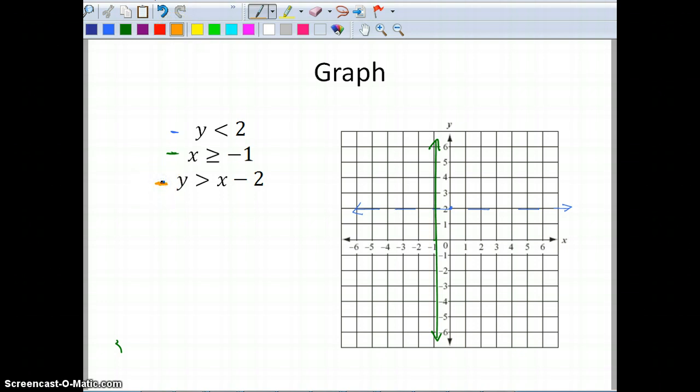It's a little more challenging to graph these on the tablet than it is to do pencil and paper. So now I'm going to graph the last one. y is greater than x minus 2. My y-intercept is negative 2. My slope is 1, rise 1, run 1. And I'm going to have a dashed line.